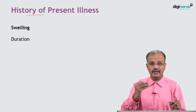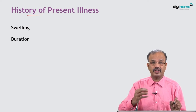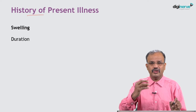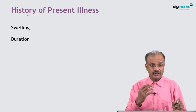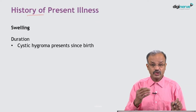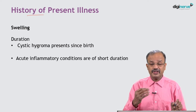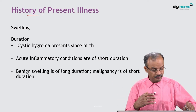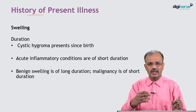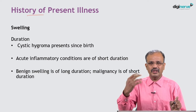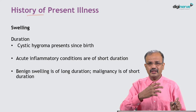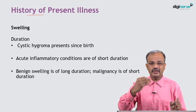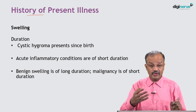Duration is the first thing to ask: how long has the swelling been there? This is very important. A swelling of very short duration could be inflammatory — perhaps an abscess or infection. A swelling of long duration may be a benign lesion. A swelling of short but not immediate duration could be malignant. For example, cystic hygroma is present since birth; acute inflammatory conditions are of very short duration with pain and fever; benign swellings like neurofibroma or lipoma may have been there for three to five years; malignancies are of short duration such as two to three months, which should raise suspicion.